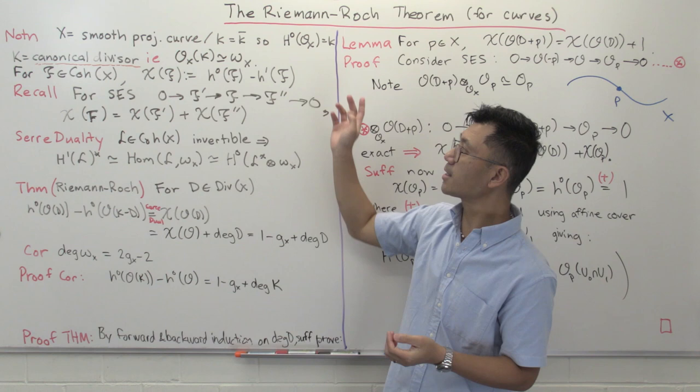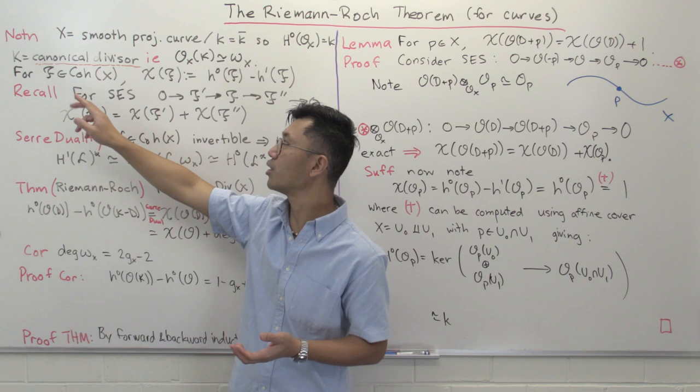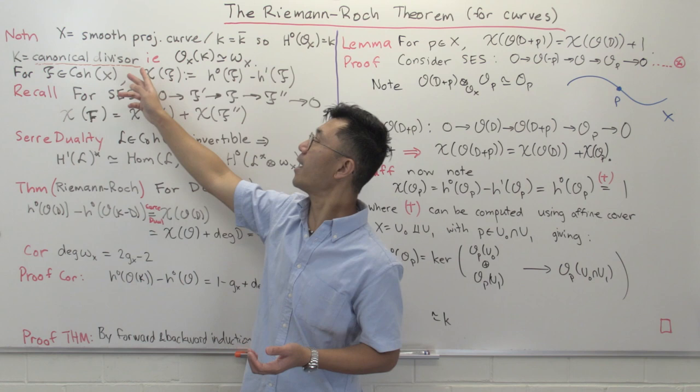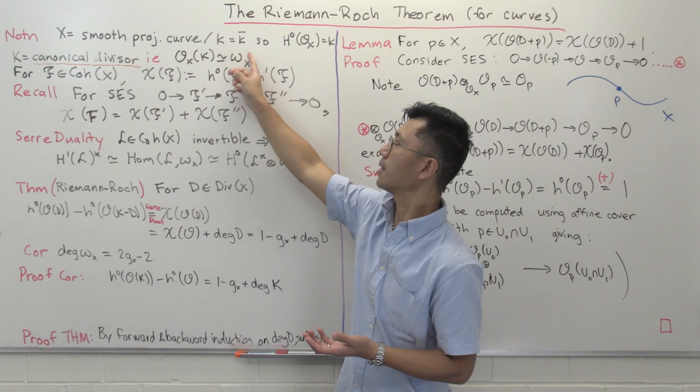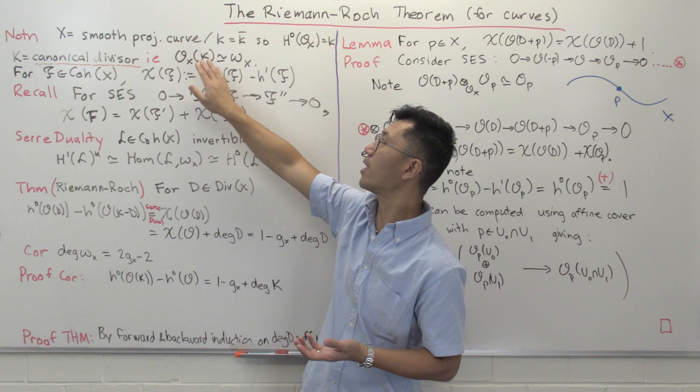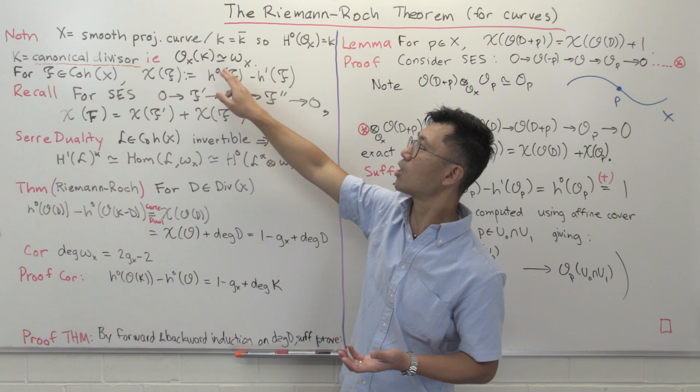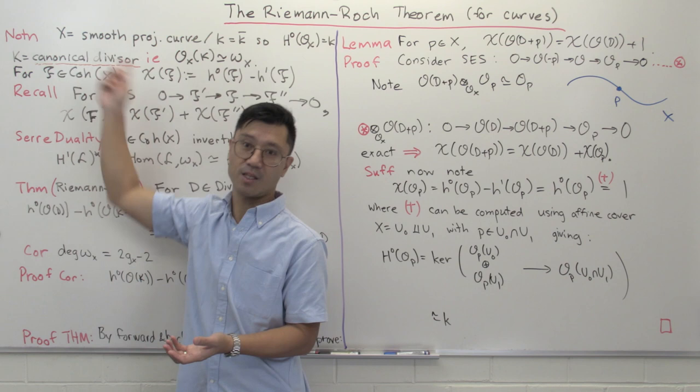The next thing that we need is the canonical sheaf, omega_X. We want big K to be the canonical divisor. Whenever you have an invertible sheaf like omega_X, it can be embedded as a sheaf of rational functions — it'll be an invertible subsheaf, and associated to that is a divisor. Any such divisor K, so O_X(K) isomorphic to omega_X, is called a canonical divisor. This K is only defined up to linear equivalence, but this is fairly standard terminology and notation.